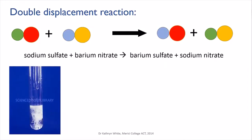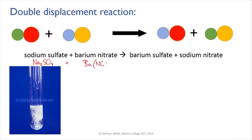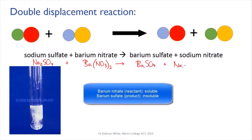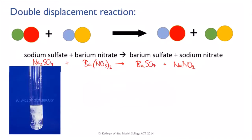An example of this reaction is the reaction of sulfate salts with barium nitrate. Barium nitrate is soluble in water but barium sulfate is not — it's a white powder. So if barium nitrate is mixed with any other sulfate salt, the barium and the sulfate get together and form a white precipitate, and this can be used as a test for sulfates.